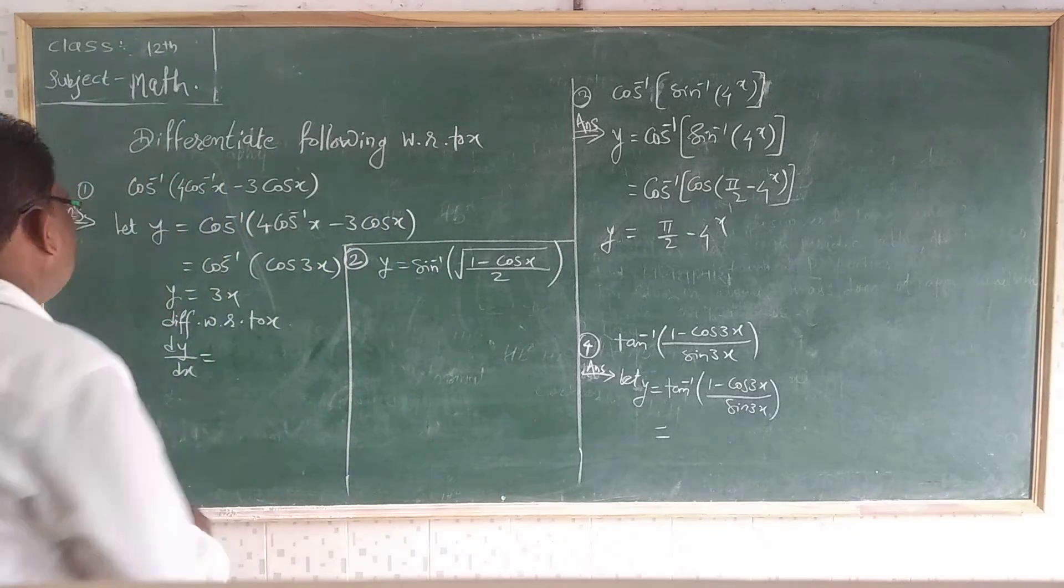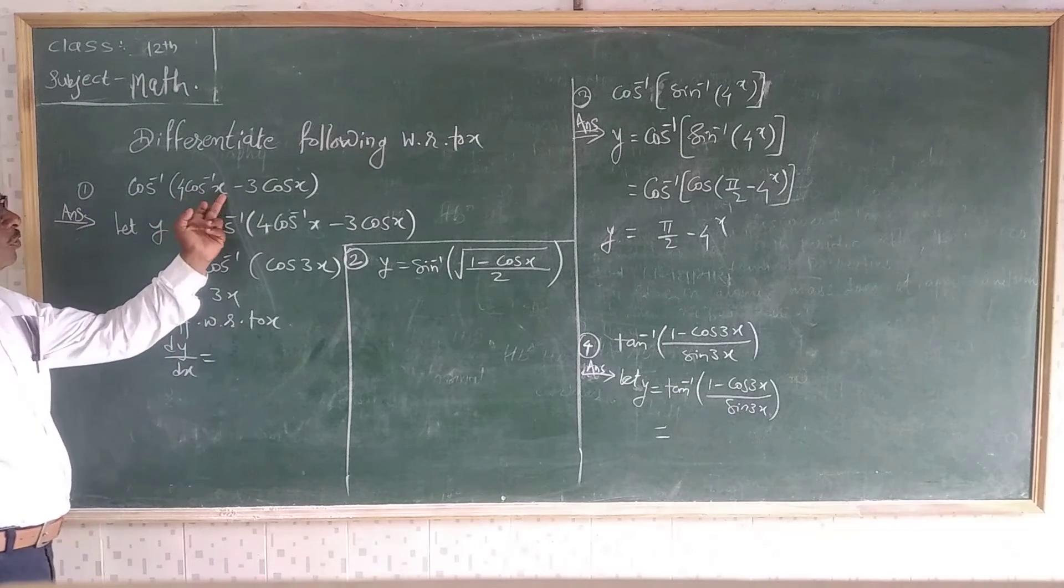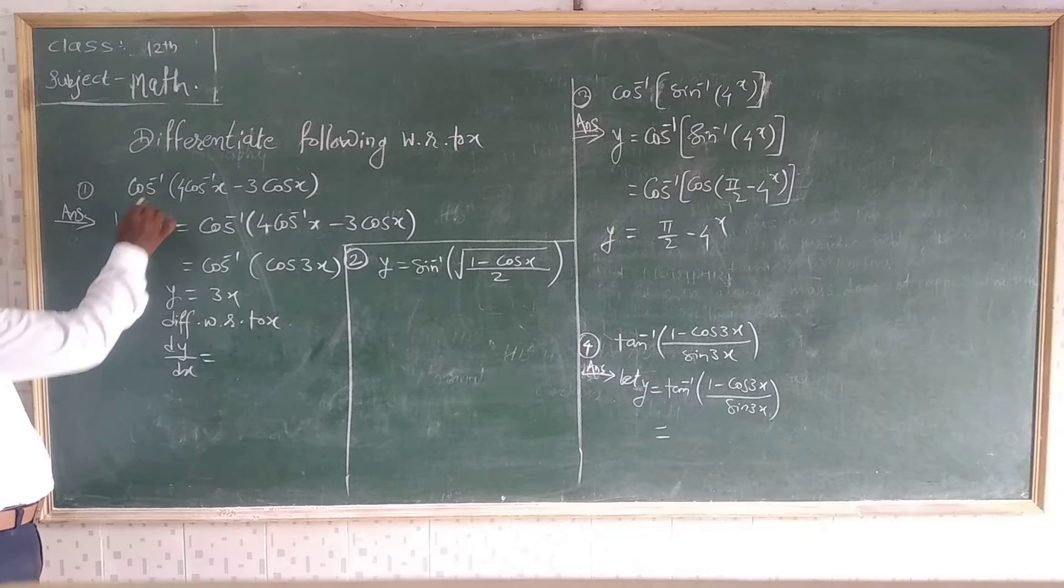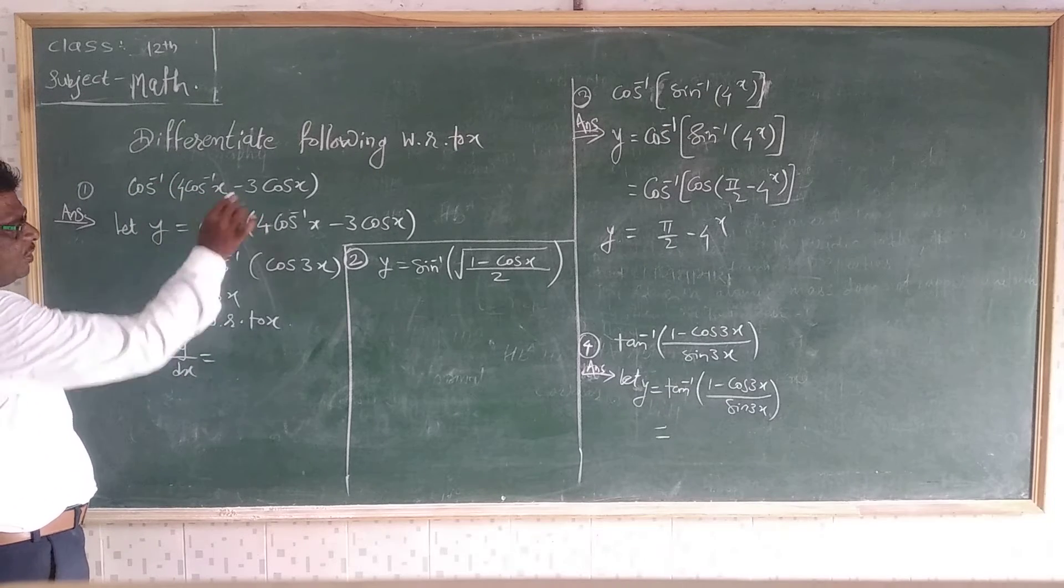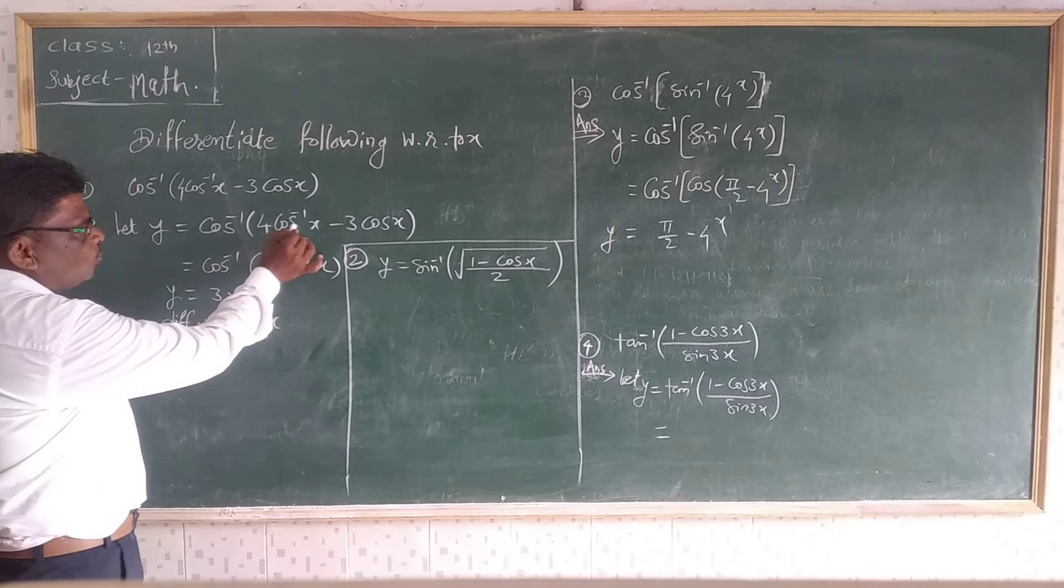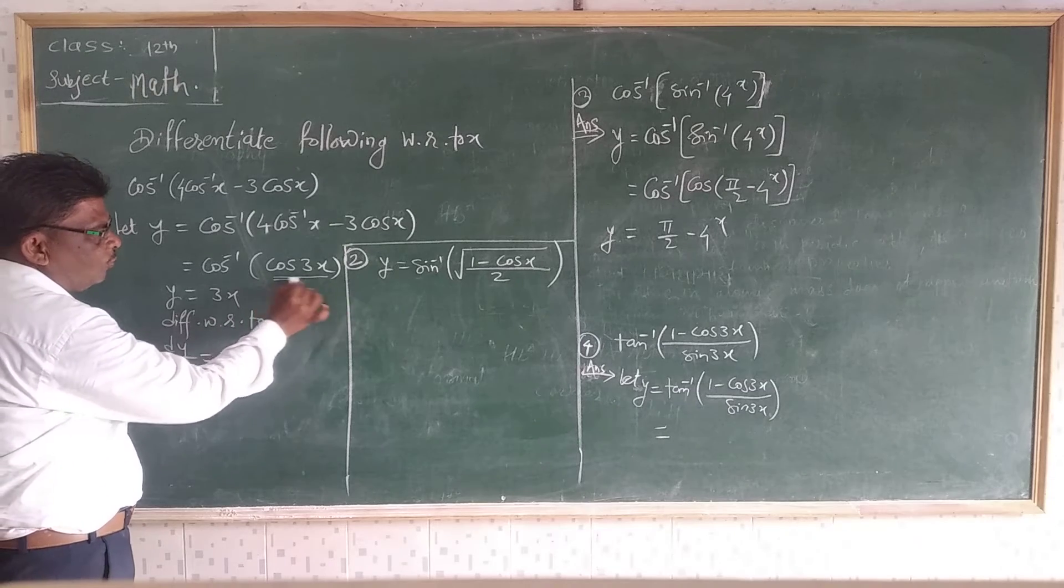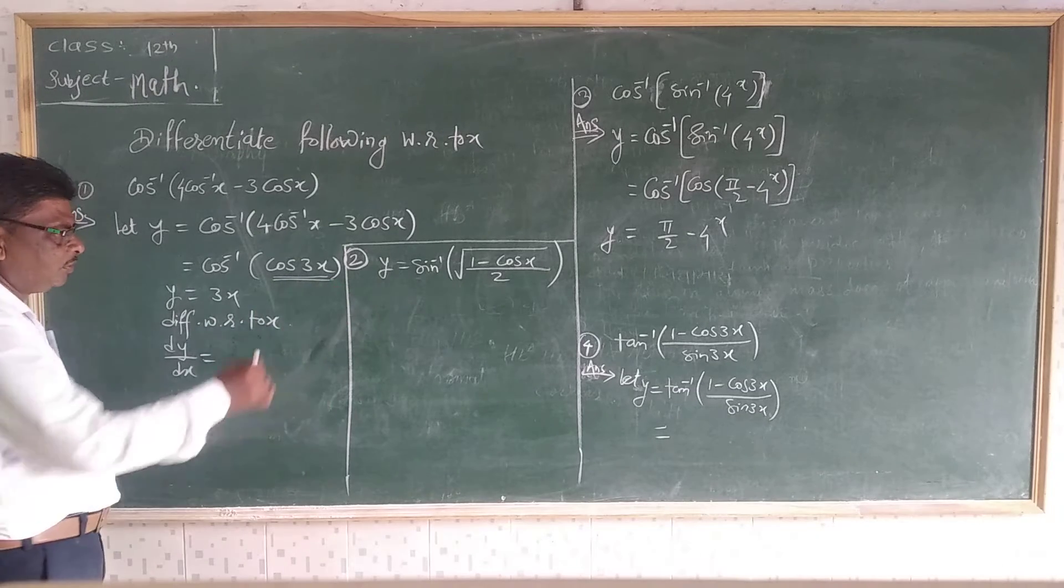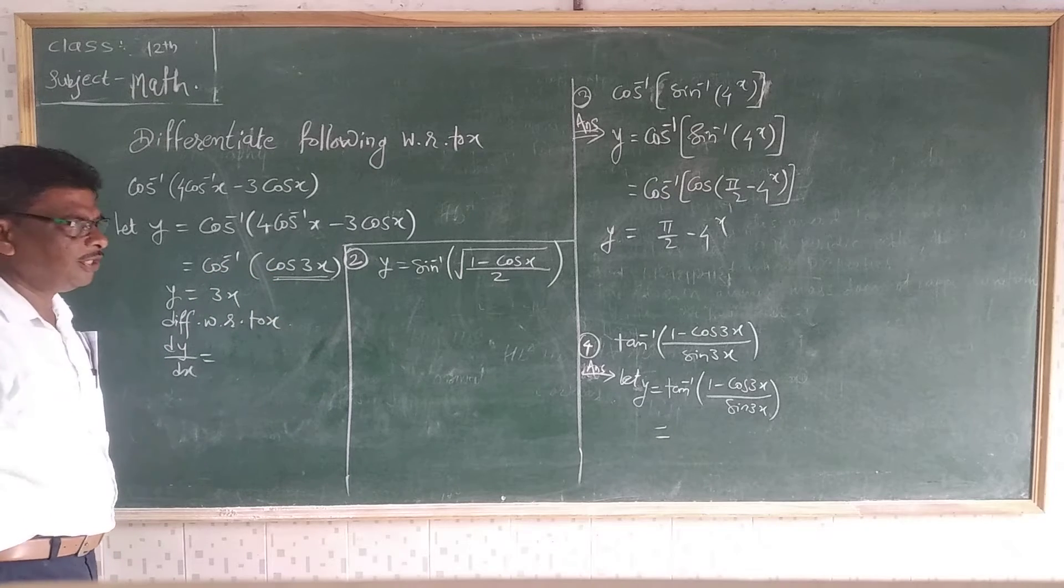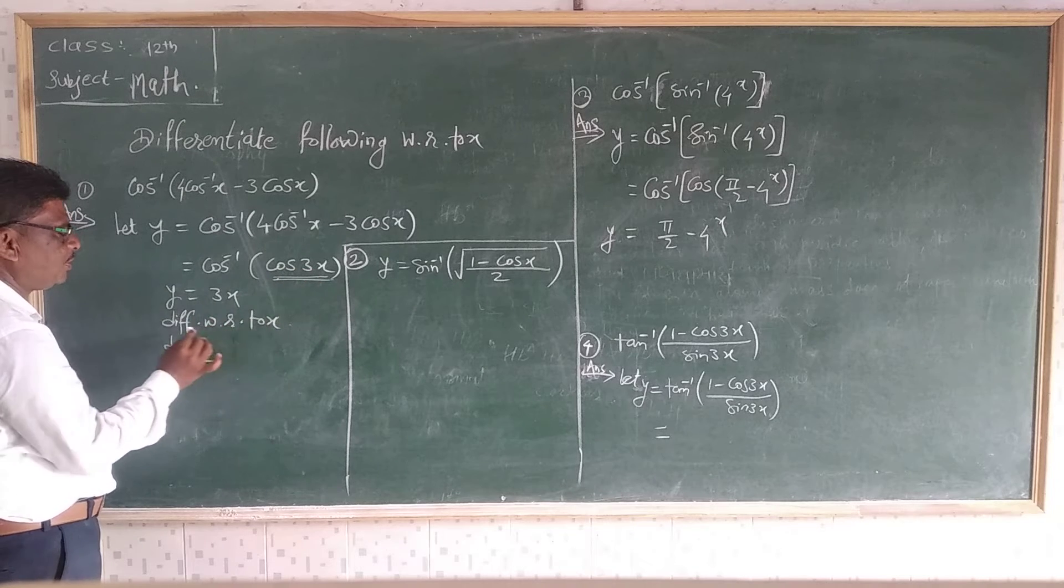See first, suppose given cos inverse of 4 cos³X minus 3 cosX. So let's consider this as y, the given function. This 4 cos³theta minus 3 costheta is the formula for cos of 3 theta or 3X. Cos inverse of cos 3X is 3X.